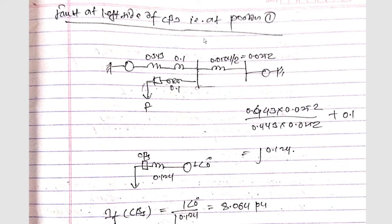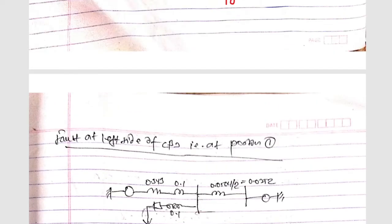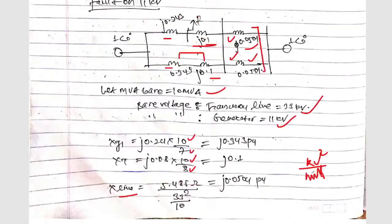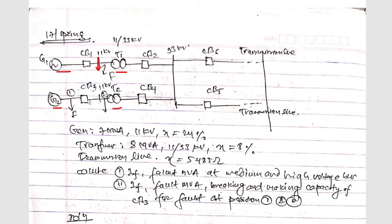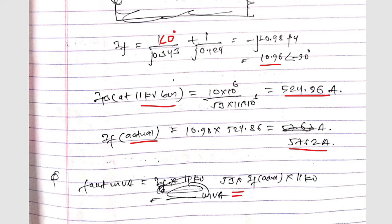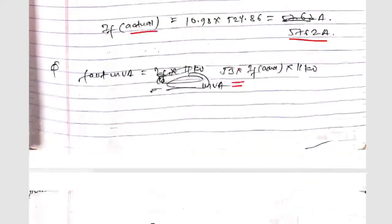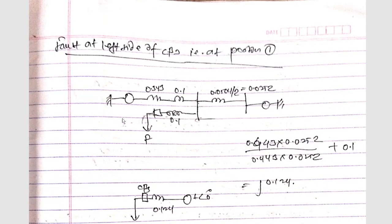Now for fault at the left side of circuit breaker, that is position 1. If the fault occurs at the left side of circuit breaker 3, this part of the circuit (G2 and its transformer) will be neglected. We omit G2 and the remaining reactance diagram includes only G1 with its transformer and the transmission line network.